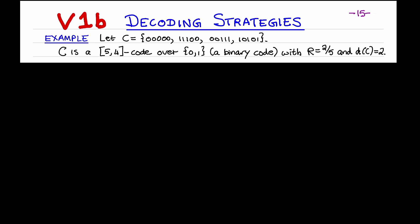Let me remind you of the notation we saw in the last video lecture. Here's a toy example of a code C with 4 codewords each of length 5, with the underlying alphabet being the binary alphabet. So C is a 5-4 block code over the binary alphabet. The rate of C is 2/5, and C has distance 2.